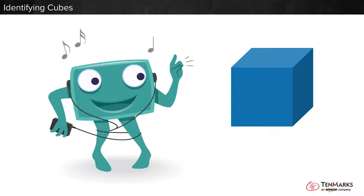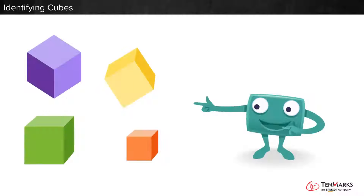Let's learn about cubes together. These are cubes. How are they alike? They are solid. All their faces are squares. It's okay that they're different sizes and colors. They are still cubes.